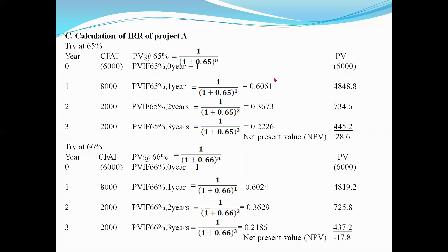We try 65%. PV factor at 65%, year 1: 1 divided by (1 + 0.65) to power 1 = 0.6061. PV factor at 65%, year 2: 1 divided by (1 + 0.65) to power 2 = 0.3673. PV factor at 65%, year 3: 1 divided by (1 + 0.65) to power 3 = 0.2265.